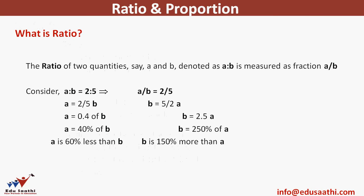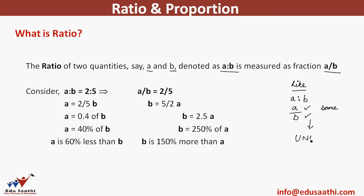What is ratio? Ratio is the comparison of two like quantities. For finding out the ratio of two quantities, say A and B, the ratio is denoted by A:B and is measured as the fraction A/B. This 'like' word is very important — I cannot take two quantities with dissimilar units and find a ratio. Ratio is always of two like quantities, and the result is unitless, meaning ratio does not have any unit.